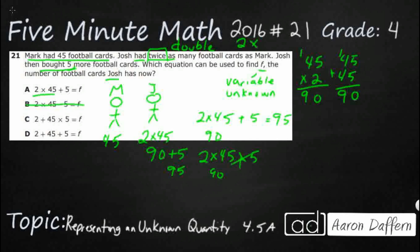C, they've got this weird two plus 45. That's not how you double. And now you've got your 45 times five. So we'd have to do that first if we're looking at order of operations. So that's going to be 225 plus two, that's an awful lot of football cards. That's 227 is C, not what we're looking for.